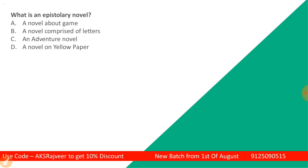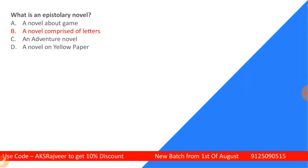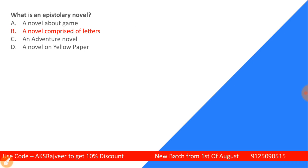Next question: What is an epistolary novel? Options are: a novel about a game, a novel comprised of letters, an adventure novel, or a novel on yellow paper. The correct answer is a novel comprised of letters. An epistolary novel is a novel in the form of letters.